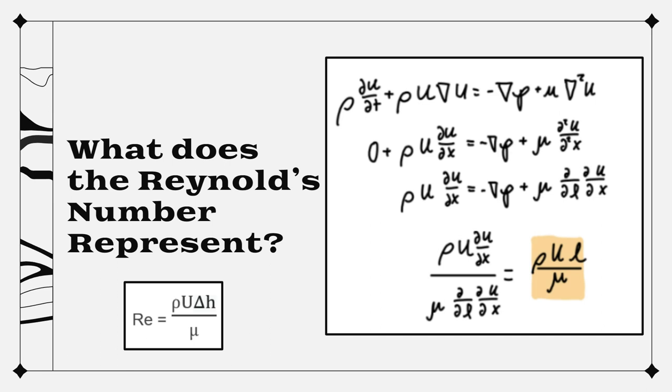So why does this happen and what does the Reynolds number represent? Looking here on the right, we take the Navier-Stokes equation for the steady state. This simplifies to two terms that determine your pressure gradient: a convective term on the left and a viscous term on the right. By taking the ratio of these two terms, you get the Reynolds number.